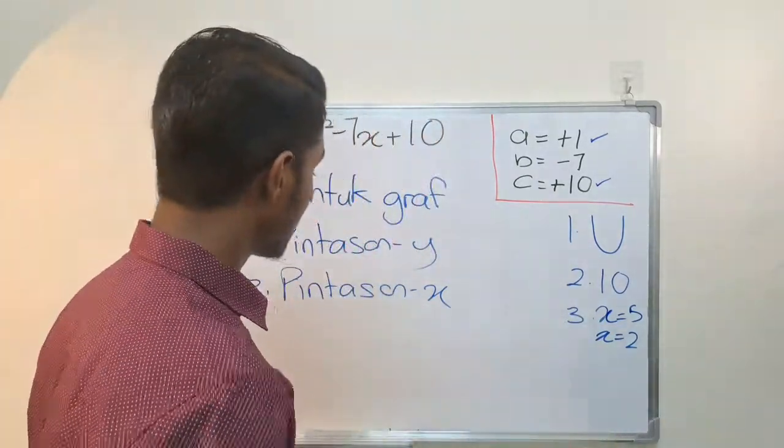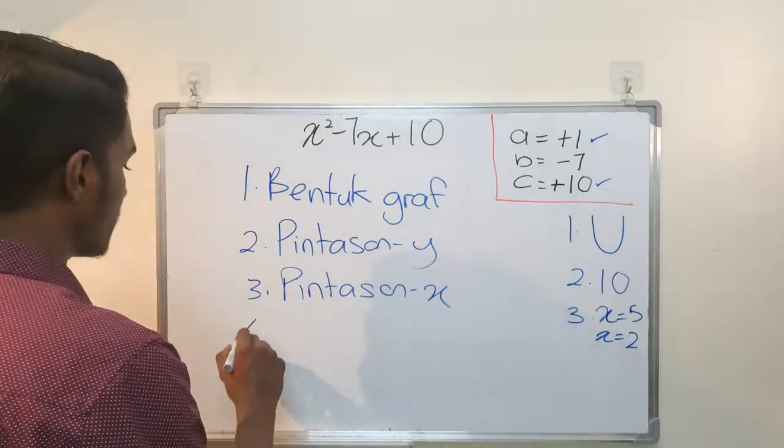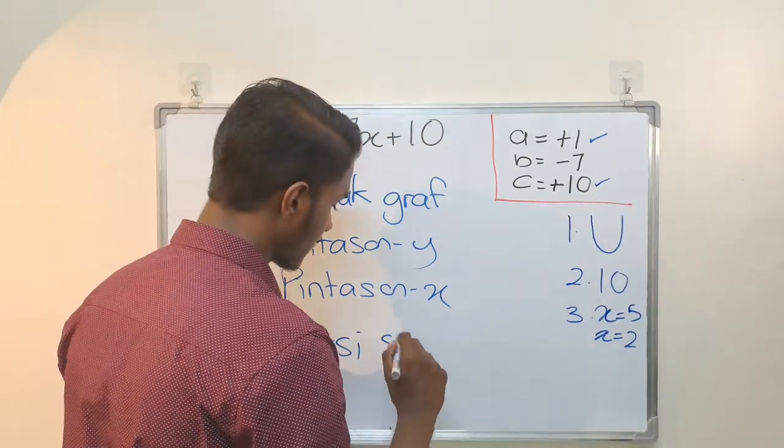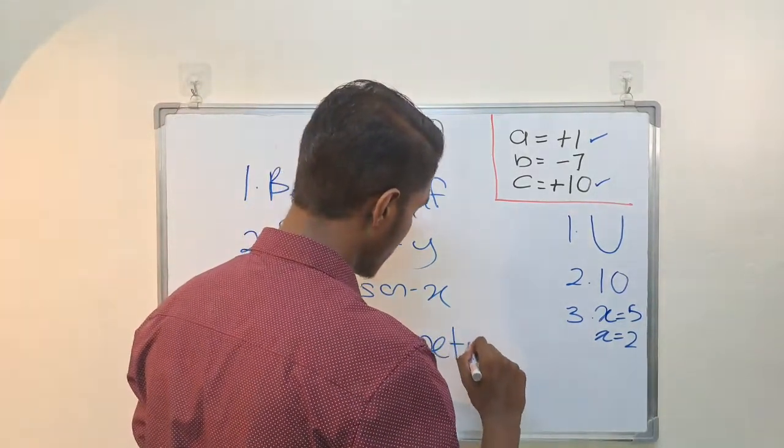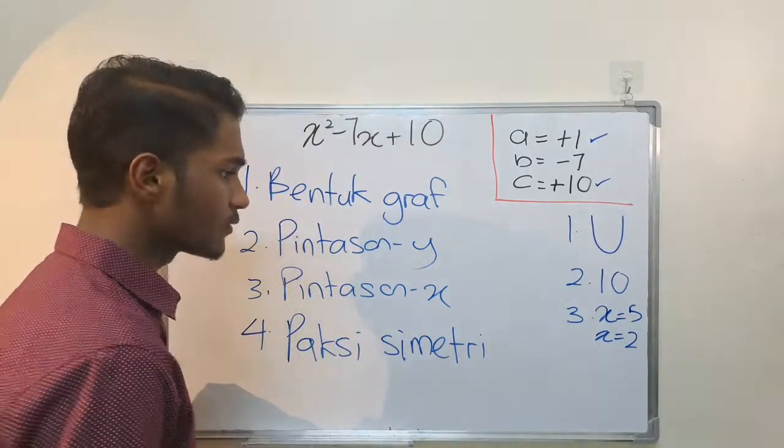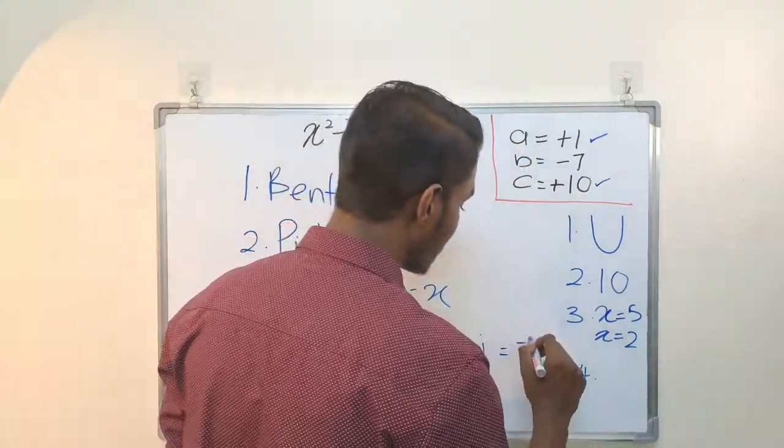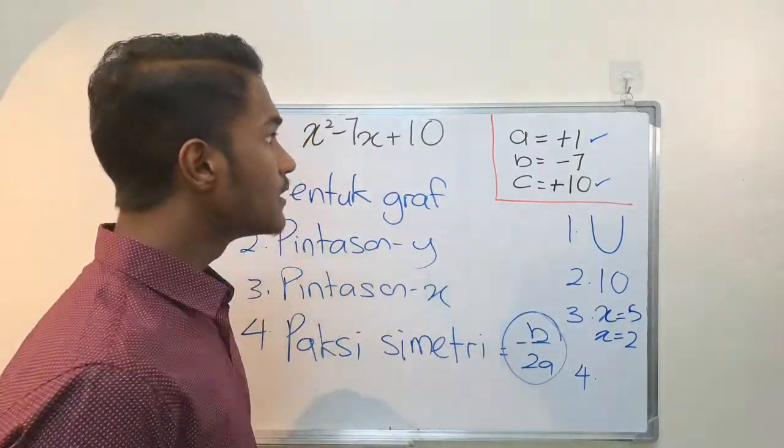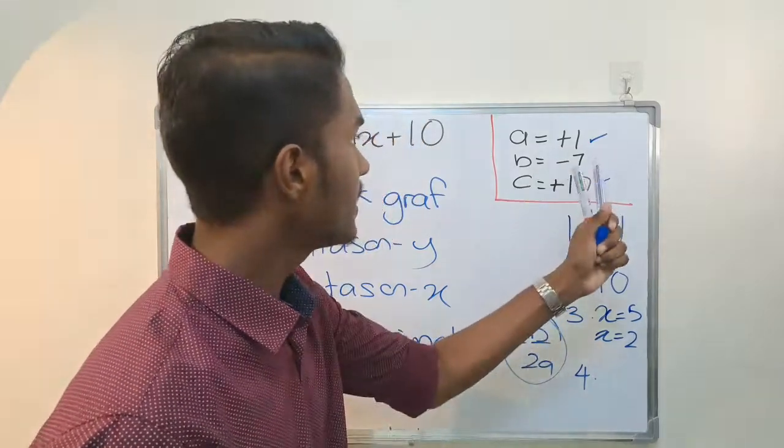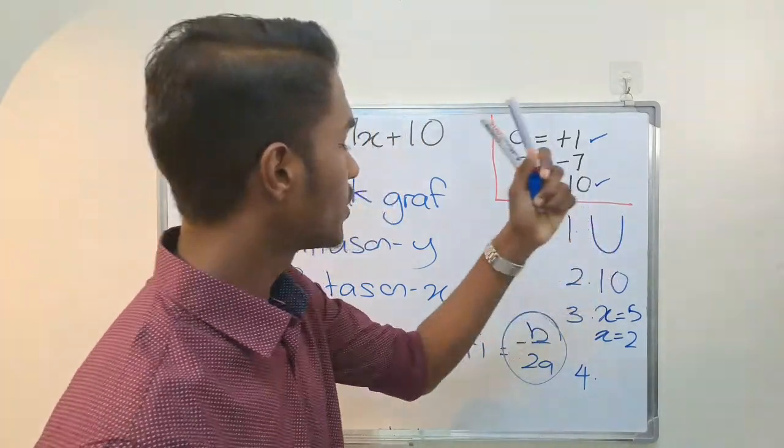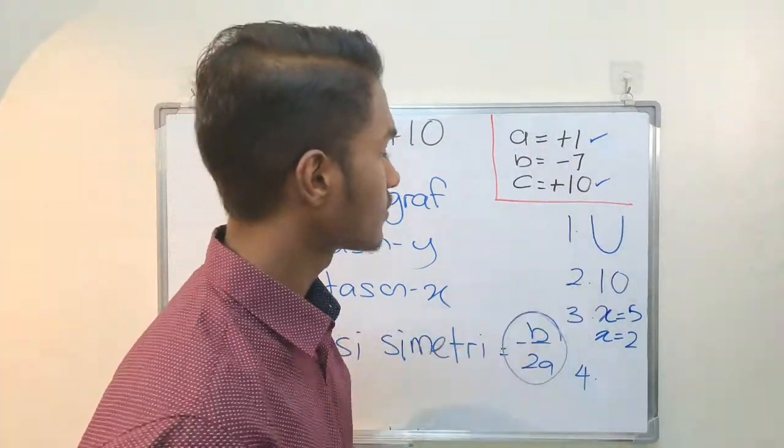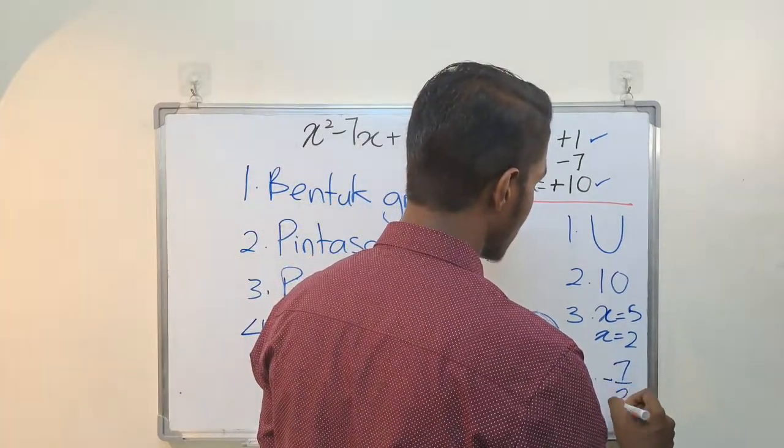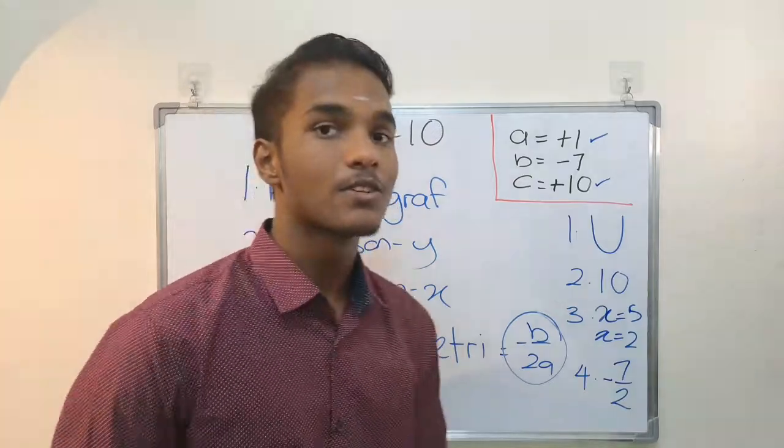The next step is the axis of symmetry. Axis of symmetry is negative b over 2a. So negative 7 over 2. So the axis of symmetry is negative 0.2. Okay, so now let's graph.